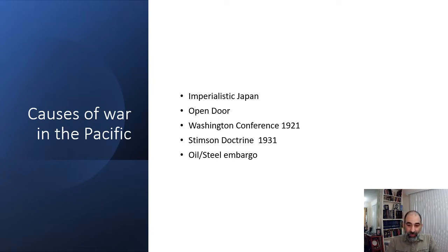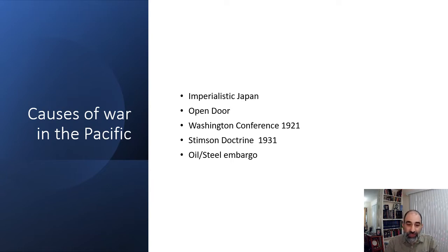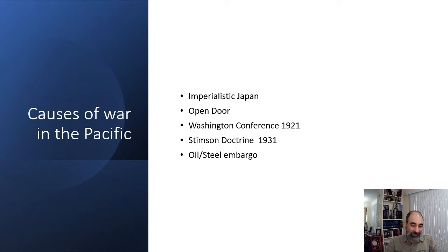In 1931, the Stimson Doctrine — named after Secretary of State Stimson — declared that the United States would never recognize any land Japan took over in China as Japanese territory, no matter how long Japan held it. That upset Japan as well. Then the biggest factor: in the 1930s, the United States placed an oil and steel embargo on Japan. Without oil and steel you can't pursue Pacific domination, so all of these things combined eventually led to Japan's decision to attack Pearl Harbor on December 7th, 1941.